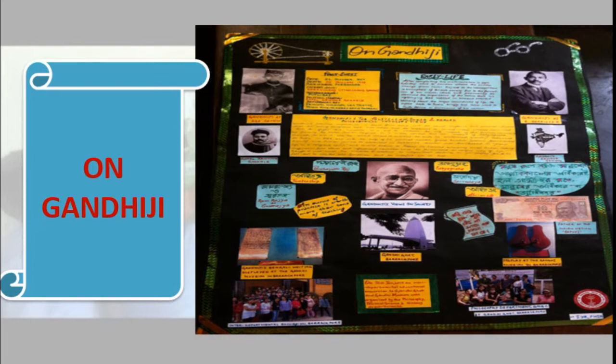This is about the first team. The subject was on Gandhiji — information on Gandhiji. We can see information about Gandhiji, pictures of Gandhiji, his handwritten script, his specs, his wheel, and something written. There are freedom fighters' pictures and notes. Like this, we will get many different pieces of information about Gandhiji — collected from articles, newspapers, the internet, and magazines. This is the work of the first team on the issue about Gandhiji.